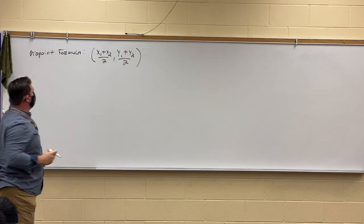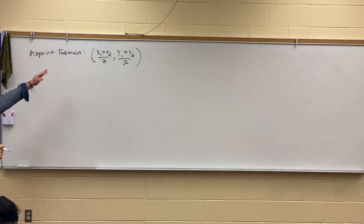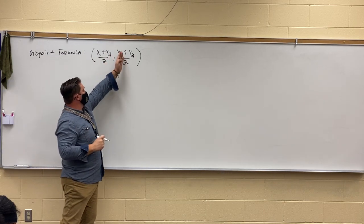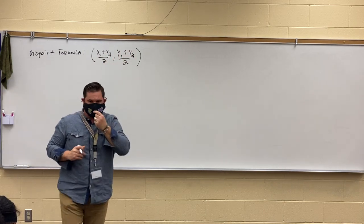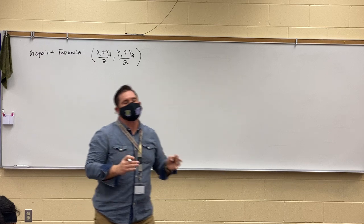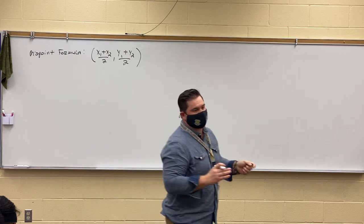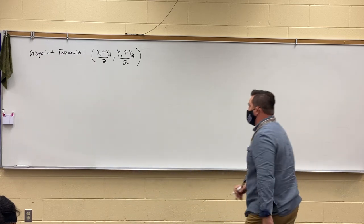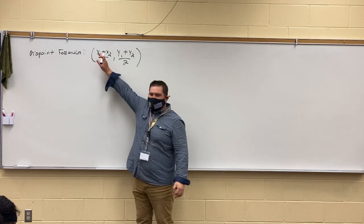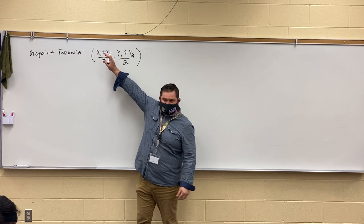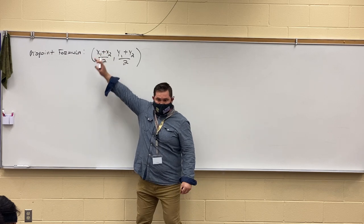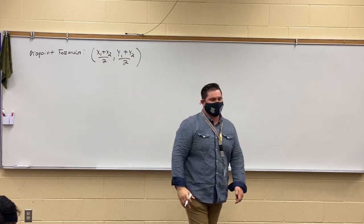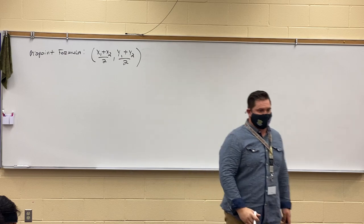Perfect. X sub 1 plus X sub 2 over 2, comma, Y sub 1 plus Y sub 2 over 2. And yesterday we even said, hey, if you look at it, all we're really doing is averaging the distance of the X and averaging the distance of the two Y coordinates, correct?